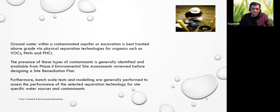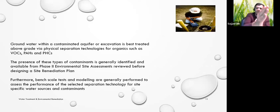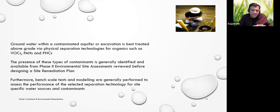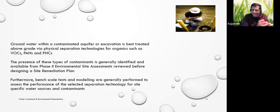An environmental site assessment — Phase 1 and Phase 2 — is different from an environmental impact assessment. An environmental impact assessment is usually for a big infrastructure project, proposing what environmental management needs to be done in the future. Environmental site assessments usually look at the past and what is happening now. Be careful with that distinction.